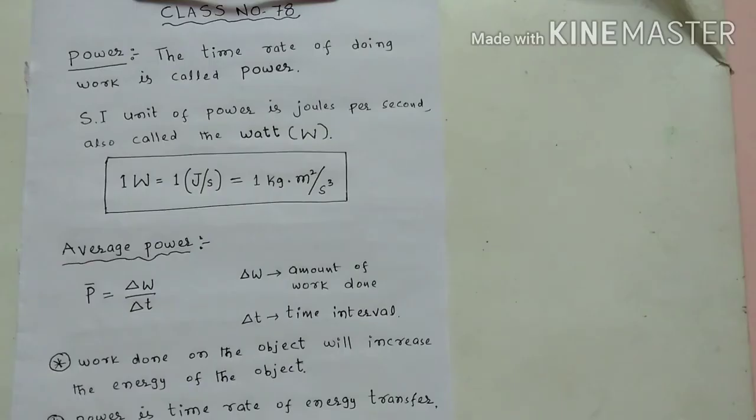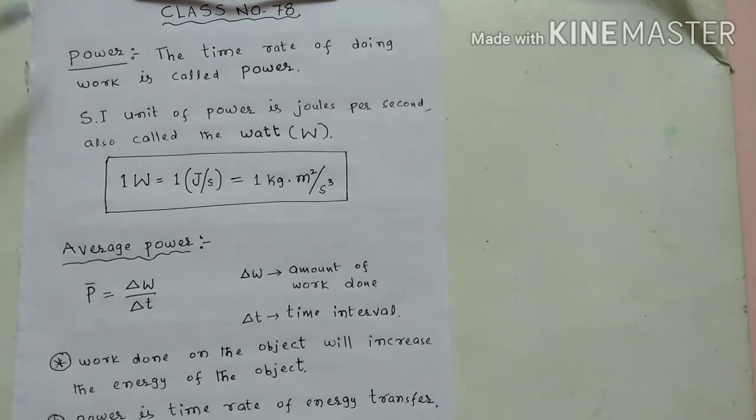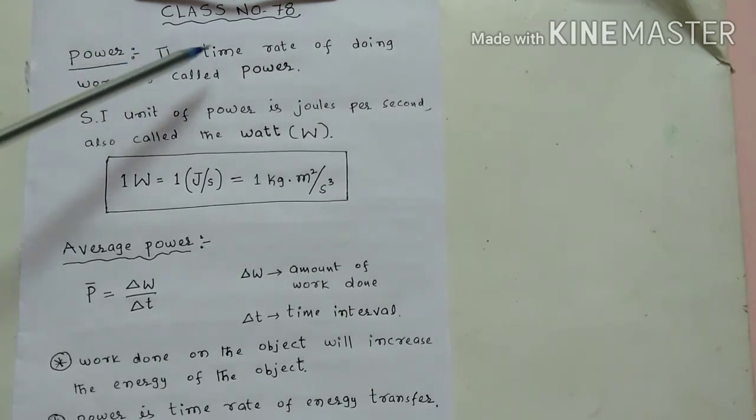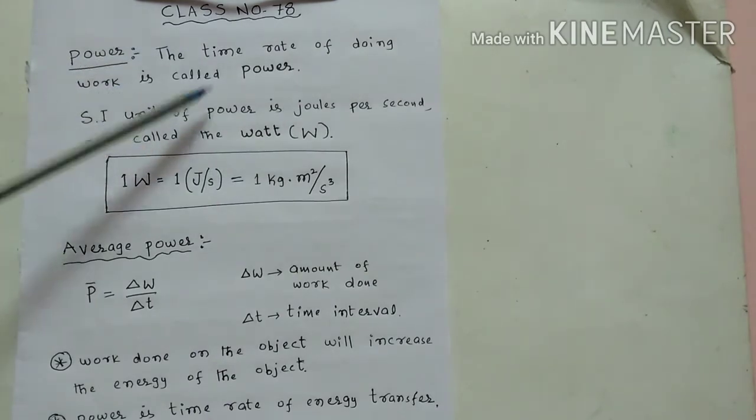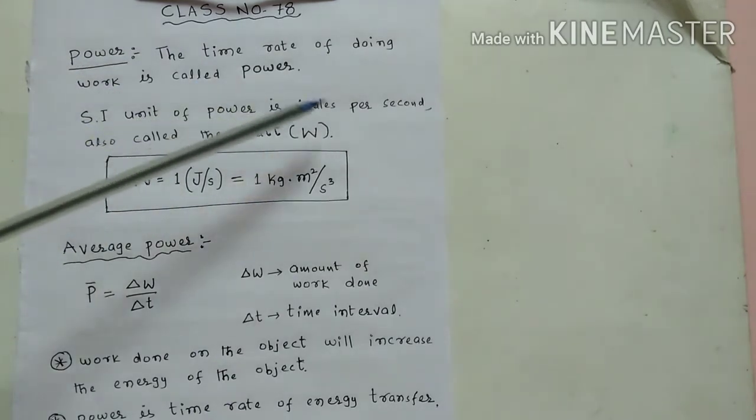Powerful means you are working very fast, efficiently. That is called power. In this video, you will understand about power, its units. Watch forward, you will understand very clearly. This is class number 78. Power: the definition is the time rate of doing work is called power. SI unit of power is joules per second, also called the watt.